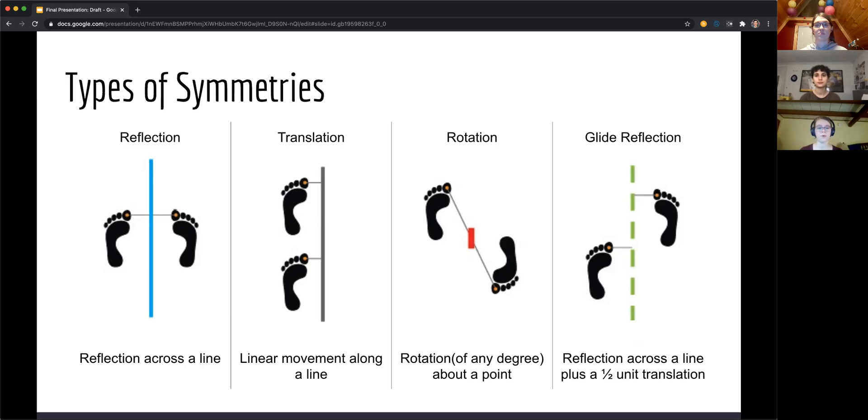So what this allows us to have is feet walking along the beach would be a glide reflection as there's that negative space on each side of a foot. And if you were to have a full unit translation, you would just have translation plus reflection.